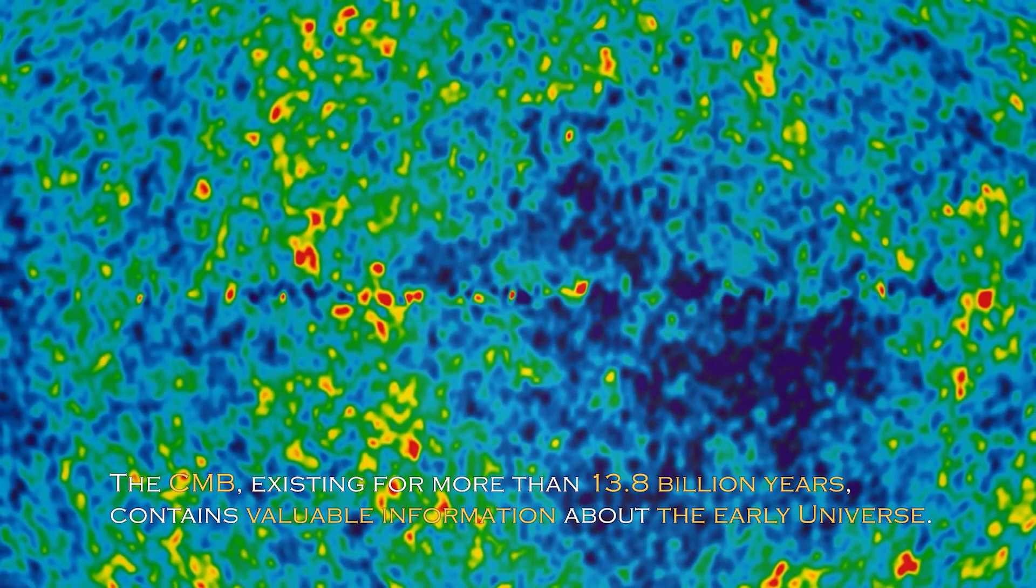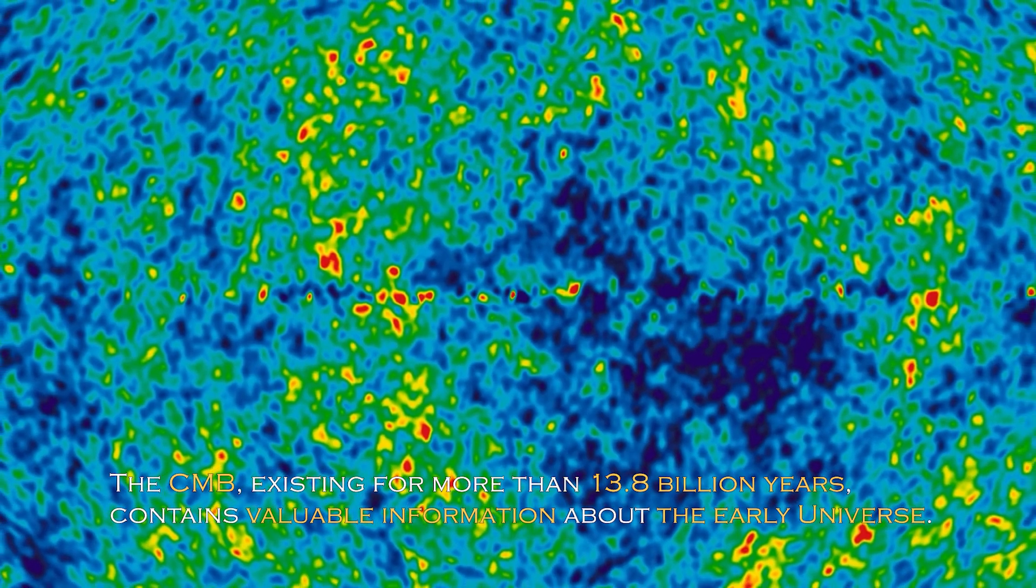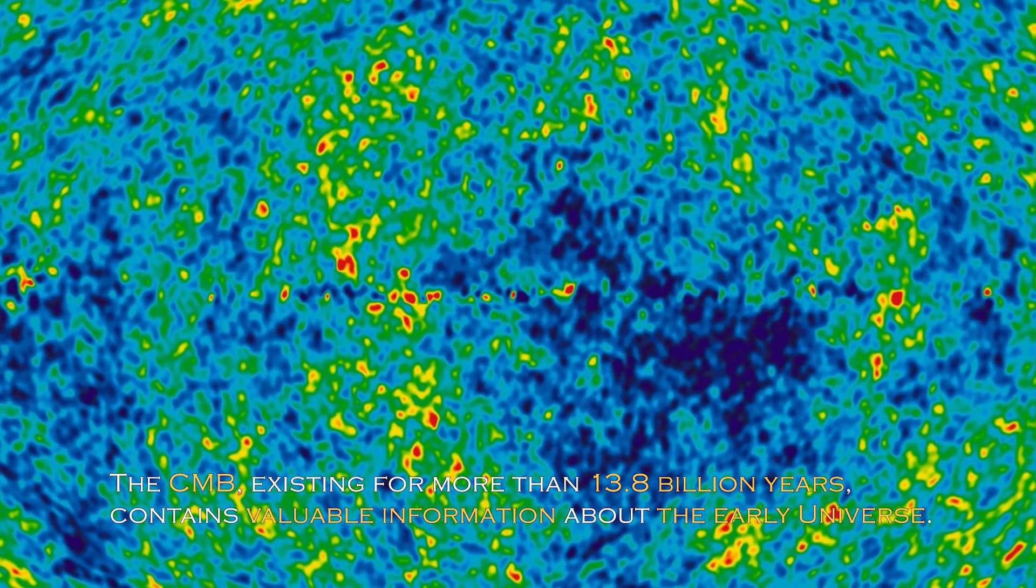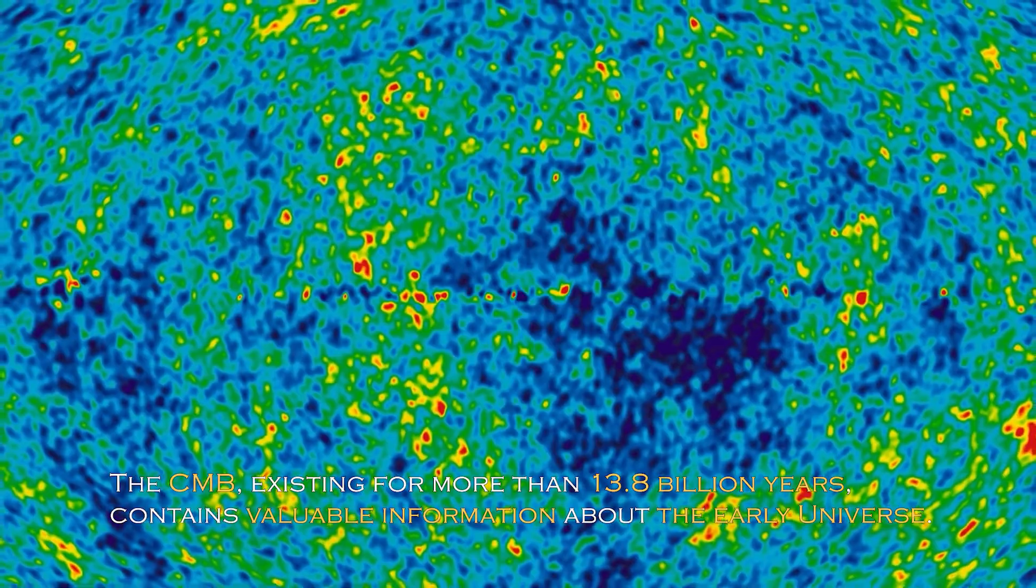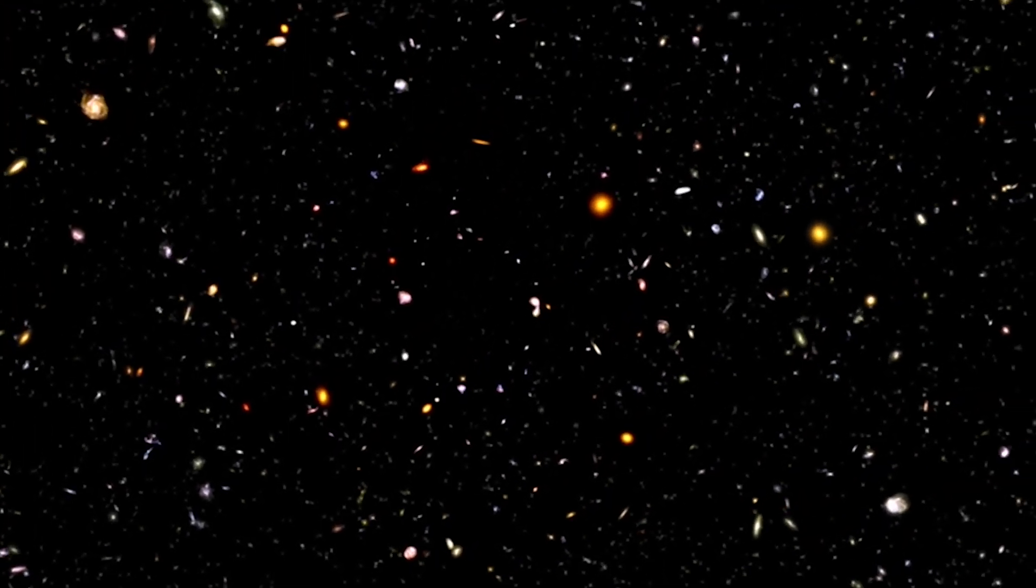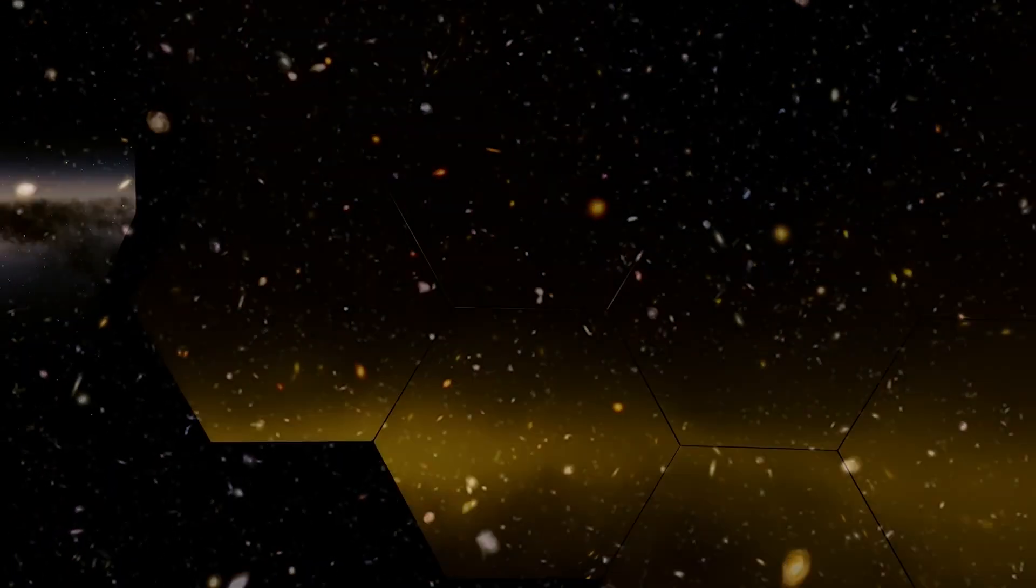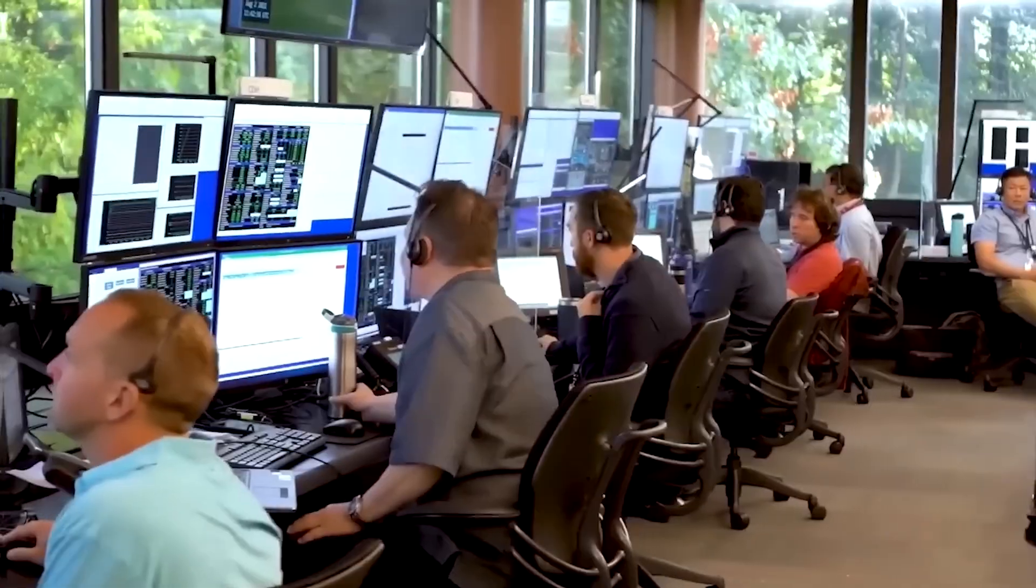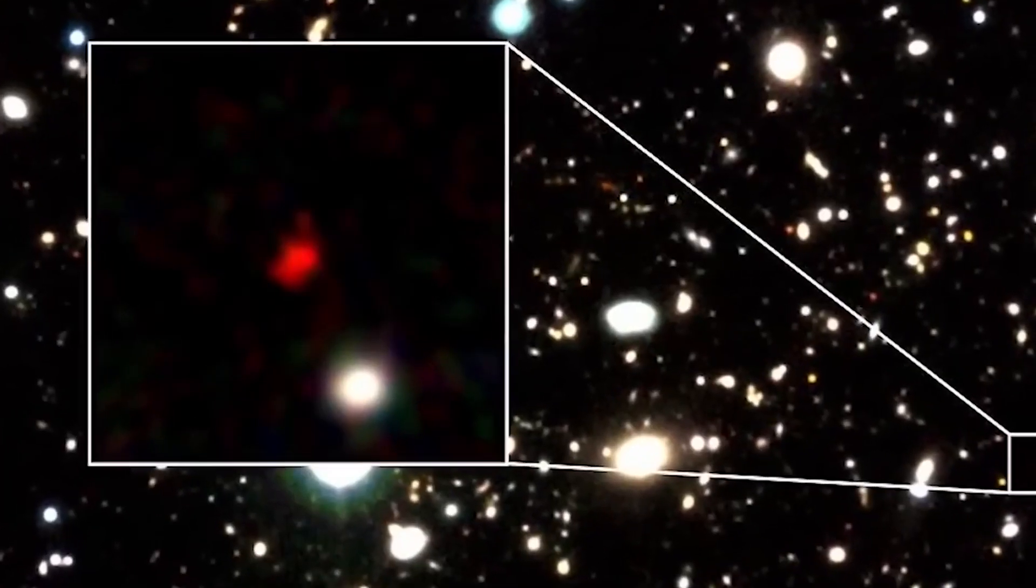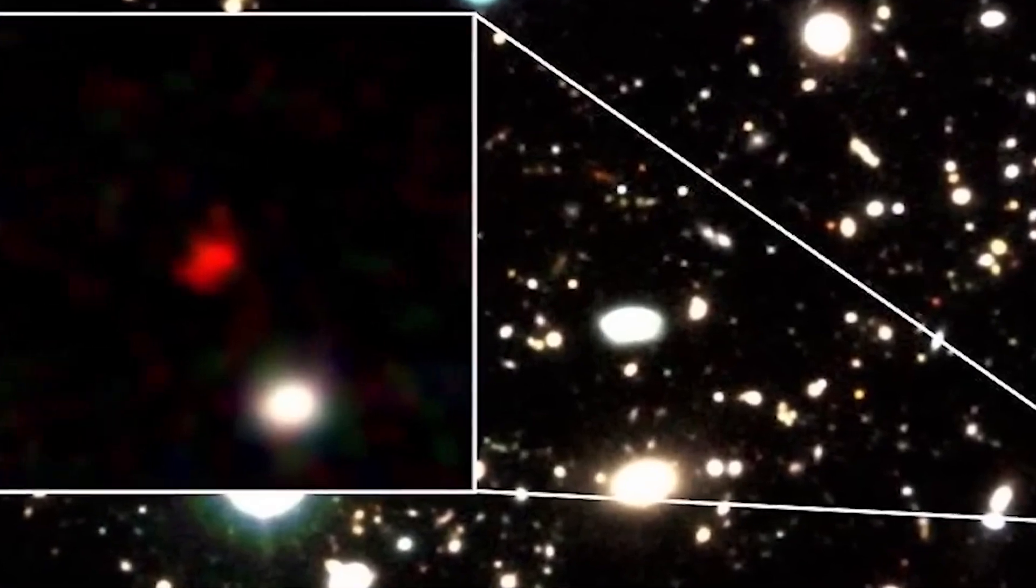The CMB, existing for more than 13.8 billion years, contains valuable information about the early universe. Over the years, theories defining the evolution of the universe have undergone remarkable changes due to new discoveries and advances in research technology. These findings have required adjustments to existing theories and, on occasion, the creation of new theories.